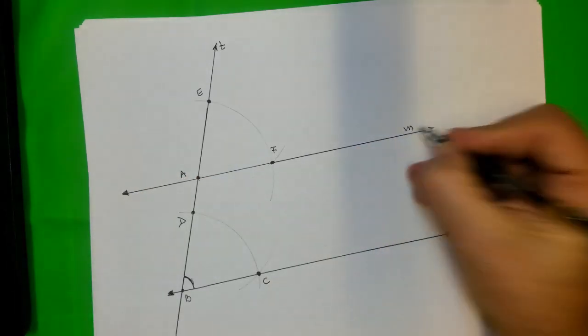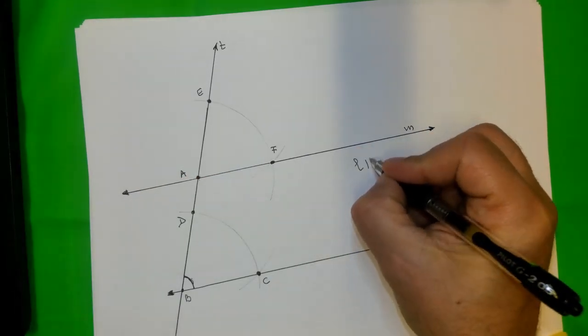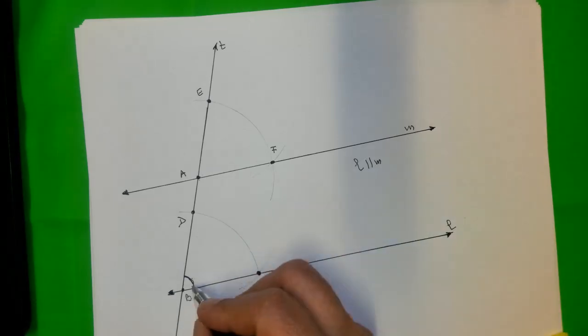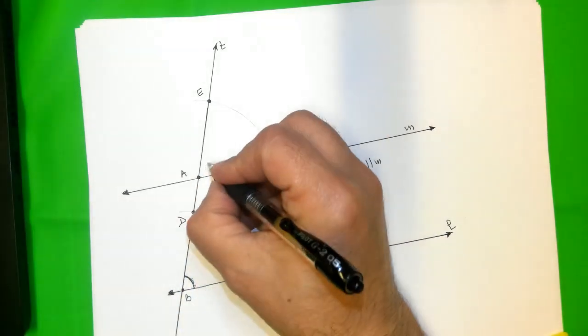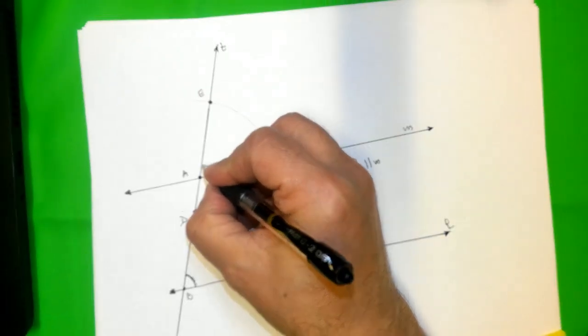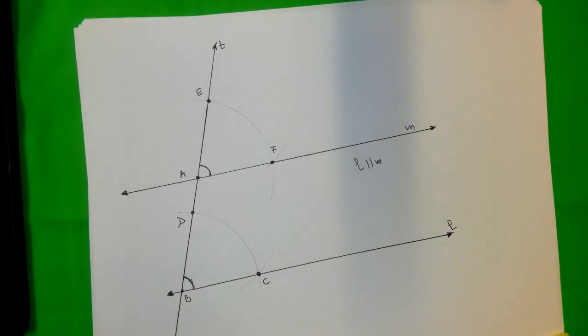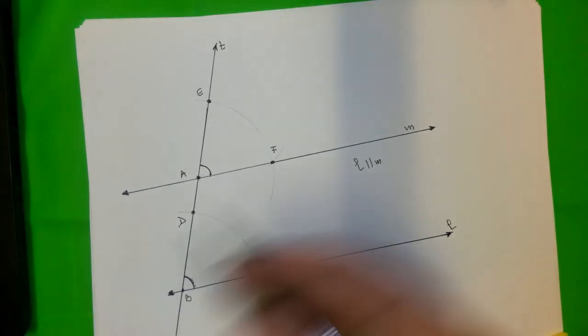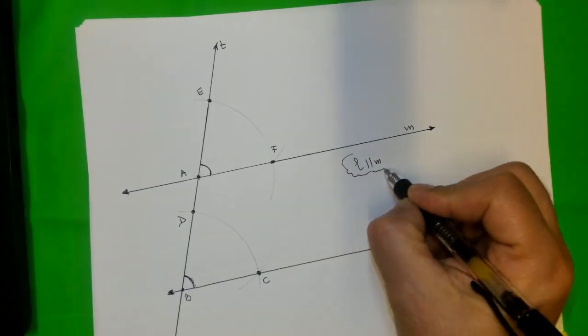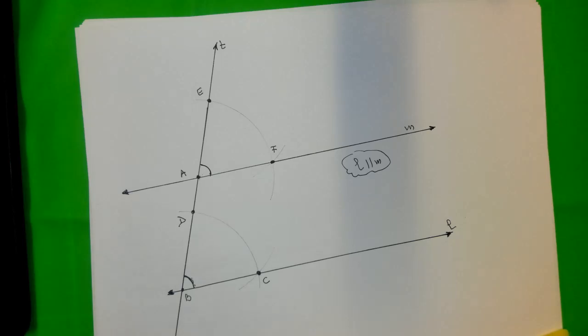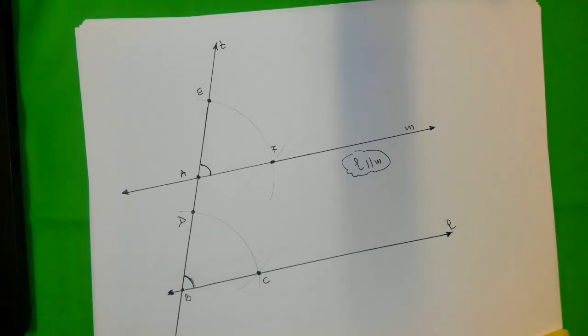These two lines are parallel lines. Why? Because this angle B and this angle A are congruent. We construct two congruent angles. Okay, and these two angles are called corresponding angles. If two corresponding angles are congruent, then the lines are parallel.